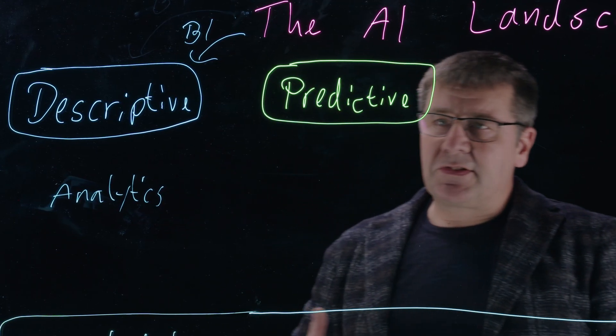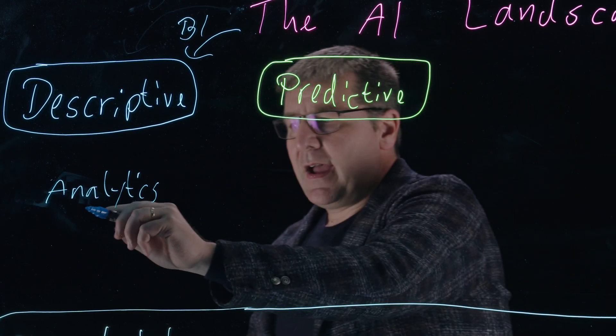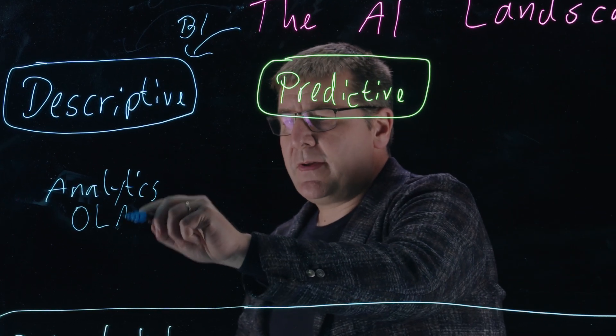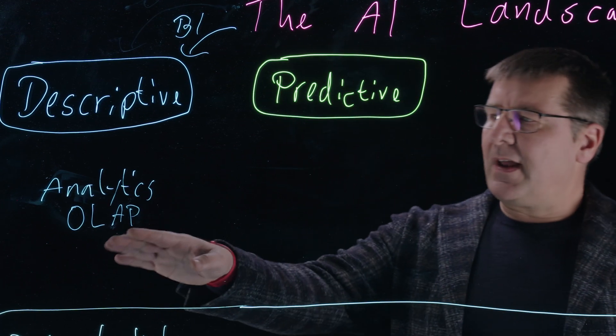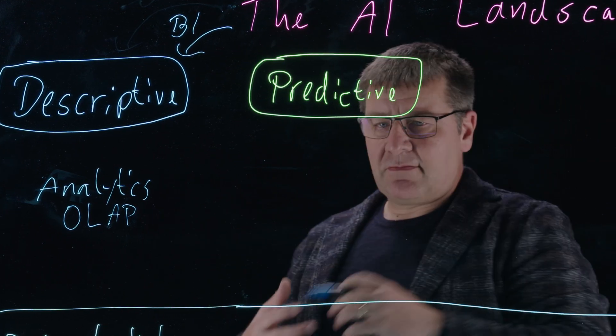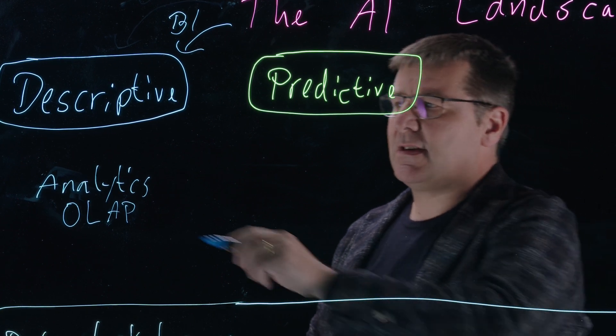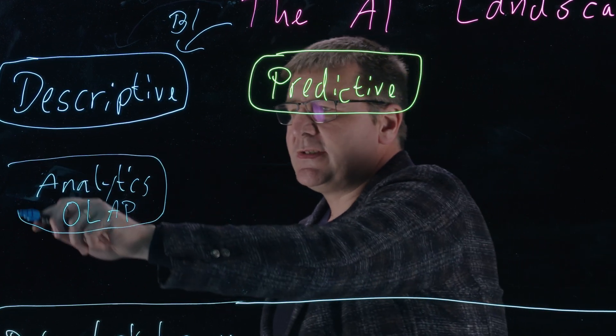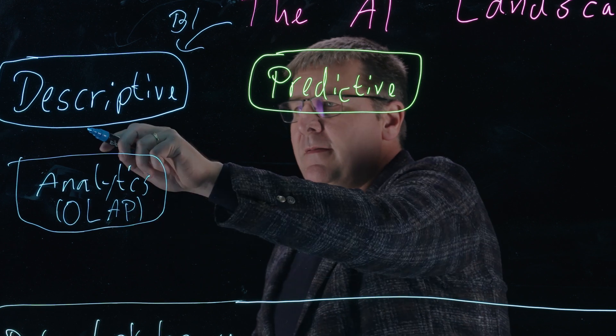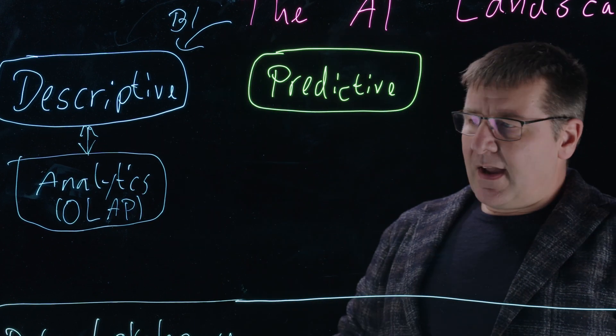Analytics typically means you're running some queries on your data, and often you may have also heard this term OLAP, which stands for online analytic processing, which is a database workload type, a certain type of SQL queries that you're running. So you use analytics or OLAP in order to conduct descriptive AI.